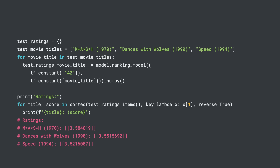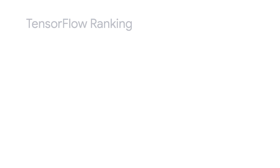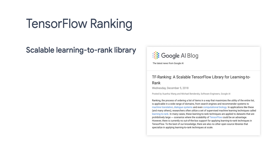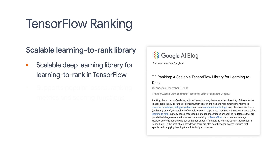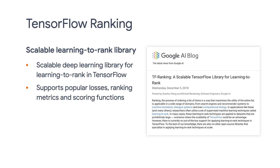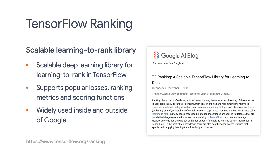This method is called Listwise Ranking, and we have a great tool to achieve this: TensorFlow Ranking. At a high level, TF Ranking helps you rank a list of candidate items effectively. TF Ranking was released in December 2018, and it is a scalable deep learning library for learning to rank in TensorFlow. It supports popular losses, ranking metrics, and scoring functions. It is widely used inside and outside of Google for various products and projects.